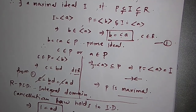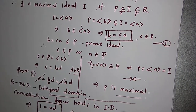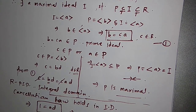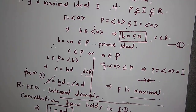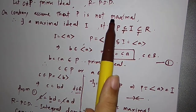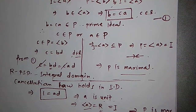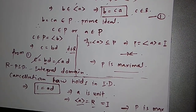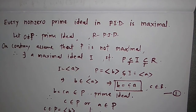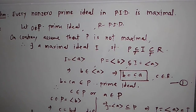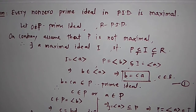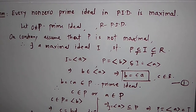So finally we can conclude that both cases lead to a contradiction. Our assumption that P is not a maximal ideal was wrong. Therefore P has to be the maximal ideal. That's it for now. I hope you liked this video. Thanks a lot for watching. Please like, share, and subscribe if you find this useful, and press the bell icon to get all updates. Thank you.